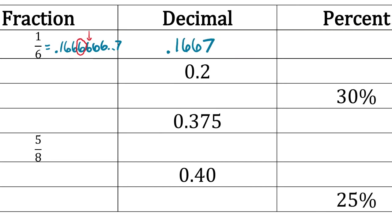Now we need to convert that decimal to a percentage. To get the decimal as a percent, multiply by 100 — just move the decimal point two places to the right — and we get 16.67%. That's it for that row.